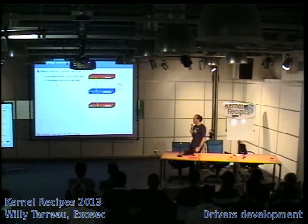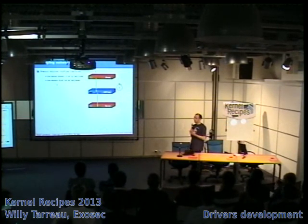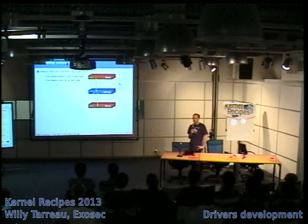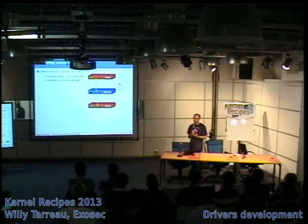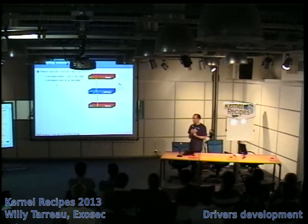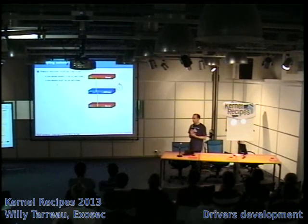How do we test network components in general? You generally need at least three devices: the device which runs your code, a client, and a server. There are variations of this architecture, but in practice it's always the same principle. The most important thing is that the testing devices must never be saturated before the tested device, otherwise you don't know what is saturated and whether your code is impacted.